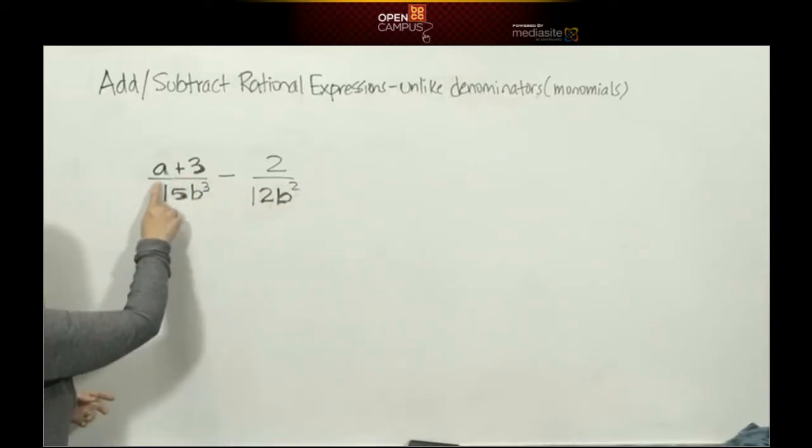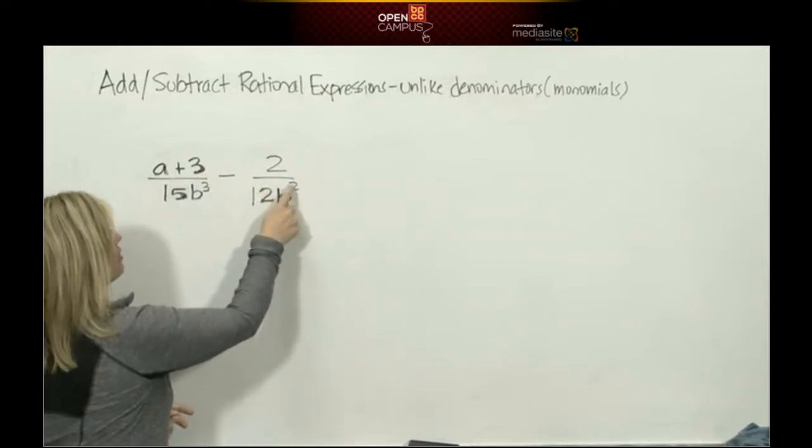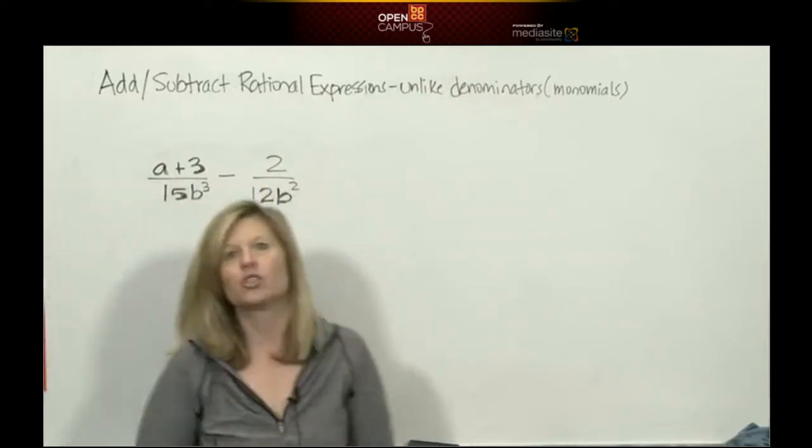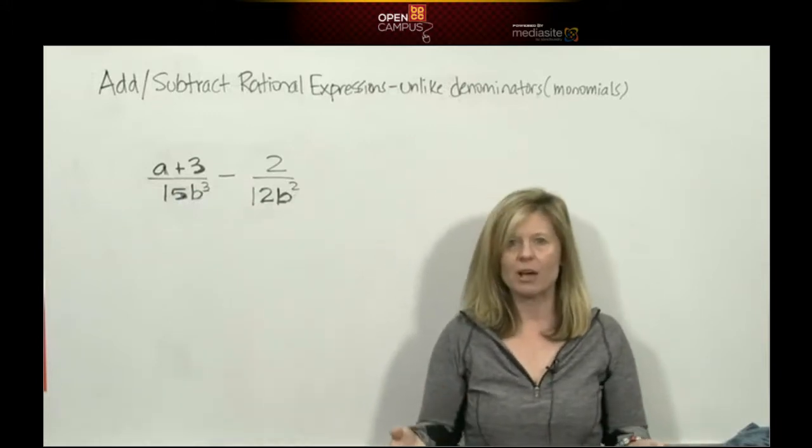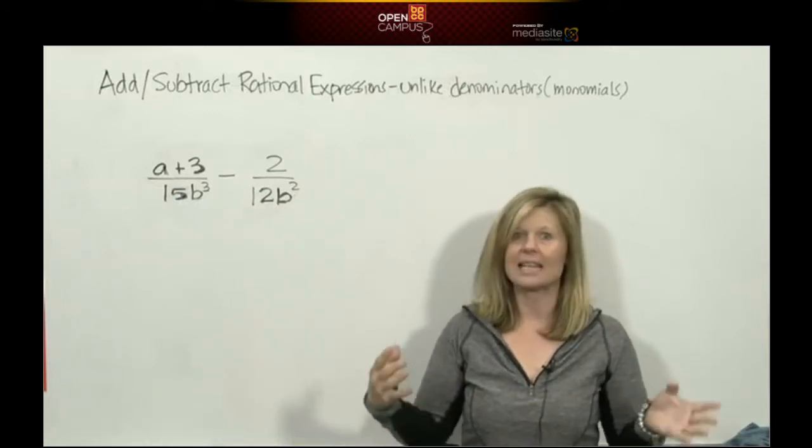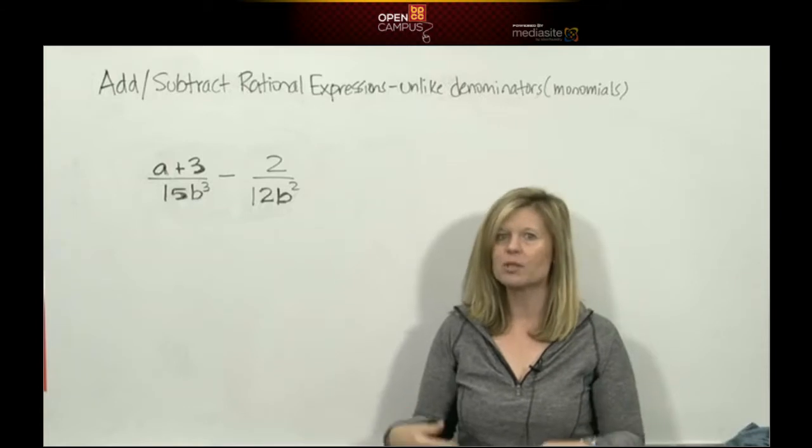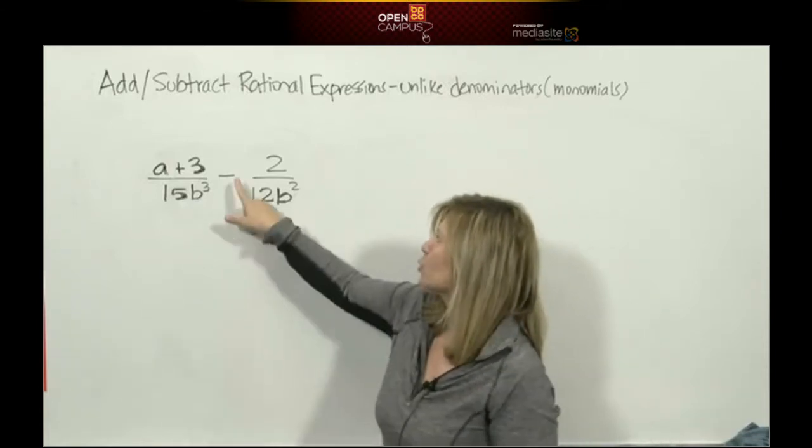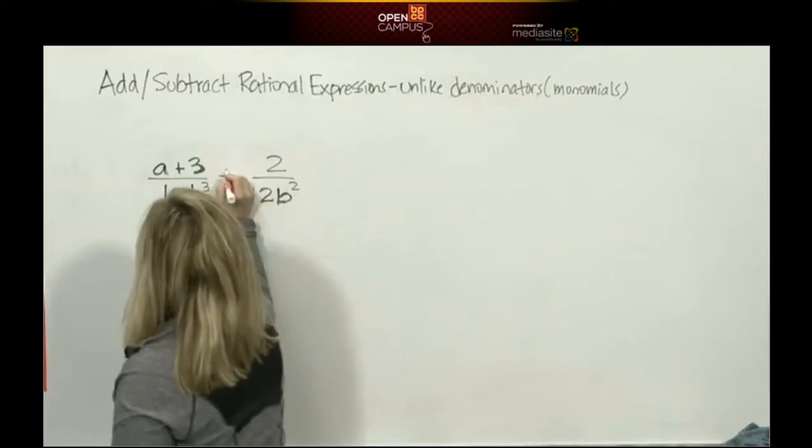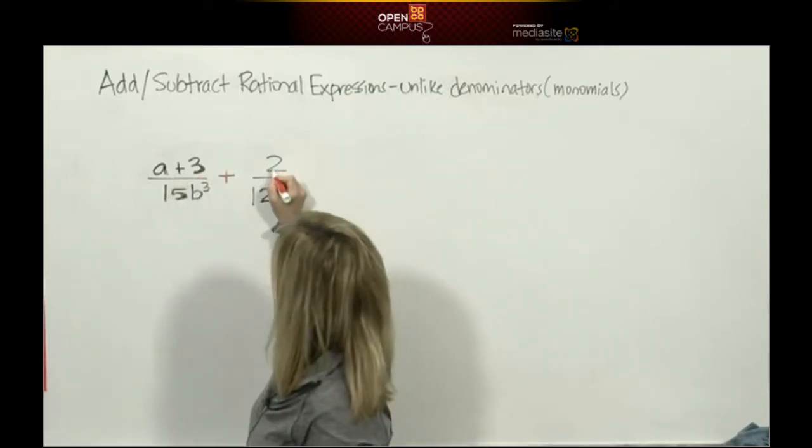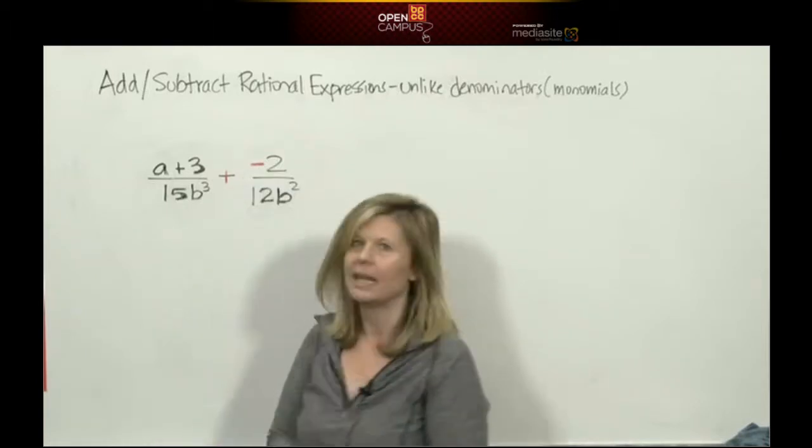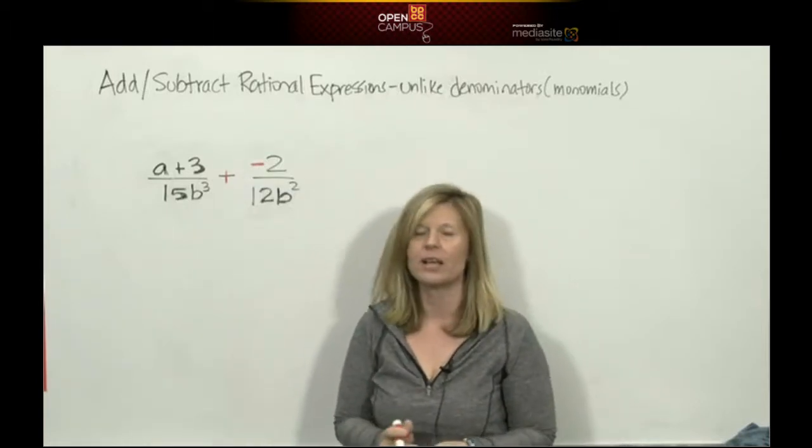So I have a plus 3 divided by 15b cubed minus 2 divided by 12b squared. We're doing subtraction of two fractions. Subtraction does not exist. Subtraction always means to add the opposite. So we're going to change our subtraction to addition by making the fraction behind it the additive inverse. That 2 will become negative 2.